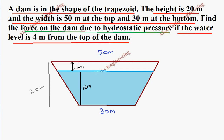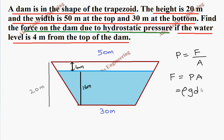Let's take the basic formula: pressure equals force divided by area. From this, force equals pressure times area. Pressure has the formula rho times g times d, where d is depth, and area is length times breadth. So we need to find the depth, length, and breadth for a small strip.